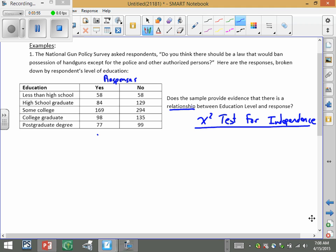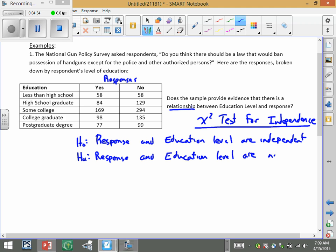And so our null, I realize I wrote that way over there, but this would tell us that response and education level, we assume that they are independent. And then the alternative is that the response and education level are not independent.